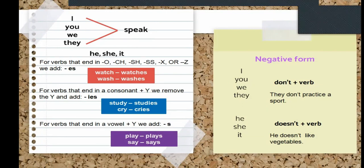But when we have the third person singular — that is he, she, and it — we add an S sound at the end. For example: he speaks, she watches, it plays, he eats, she drinks.